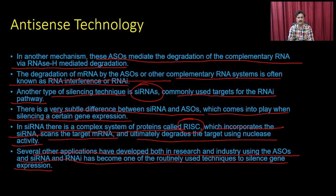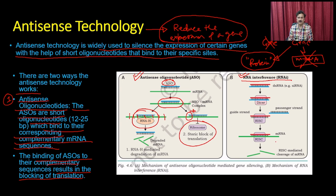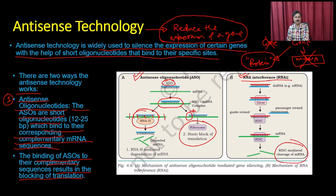We discussed antisense oligonucleotide technology and RNA interference. The mechanisms are almost the same but the machinery is different. In RNA interference, the RISC-mediated pathway uses proteins like Dicer and ultimately degrades messenger RNAs. In antisense oligonucleotides, once you have double-stranded RNA, it is targeted by RNase H, which degrades the RNA into small pieces.